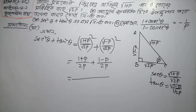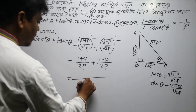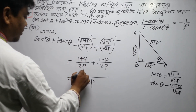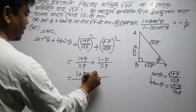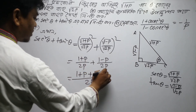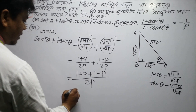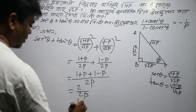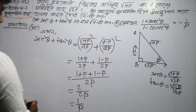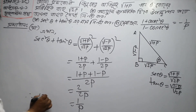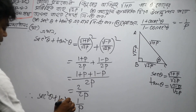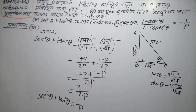And square root: one plus P is getting a 2P here, and the other is 1 minus P by 2P. So here we can calculate it — we can look at the dot as 2P. So here we have 1 plus P, and here we have 1 minus P. Calculation is 2 by 2P, 1 by P. Now we have to write: sec² theta plus tan² theta is equal to 1 by P.